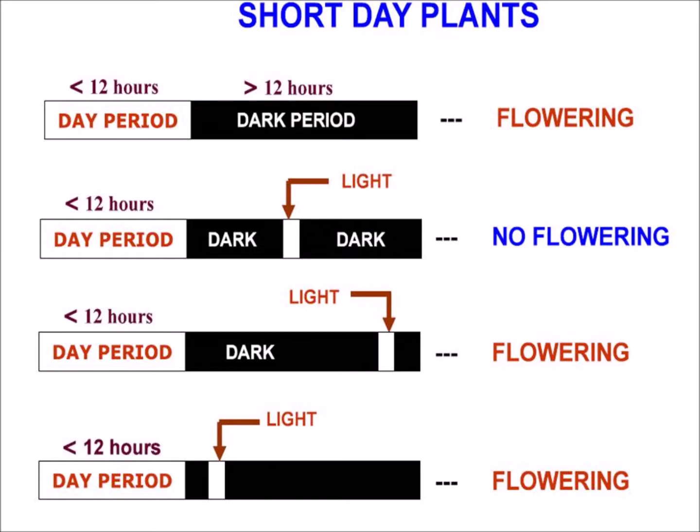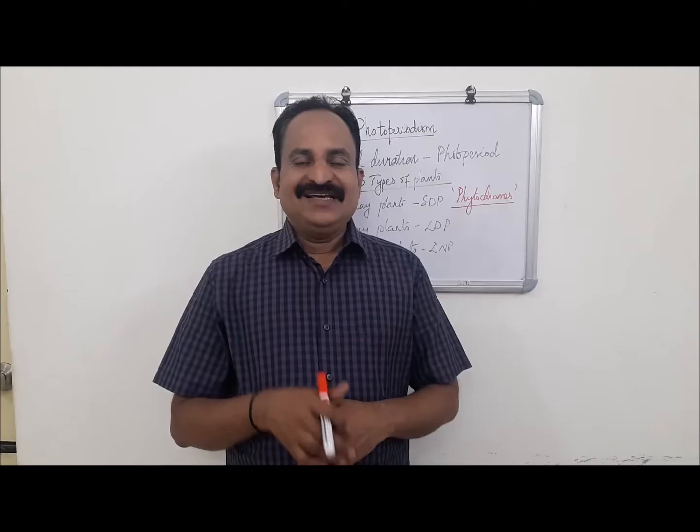Interruption of the light period with red light does not have an inhibitory effect on flowering in short day plants. Prolongation of the continuous dark period initiates early flowering.